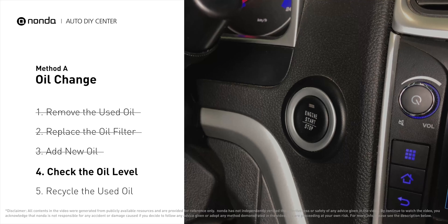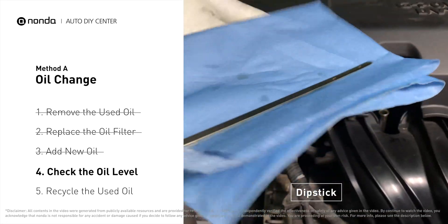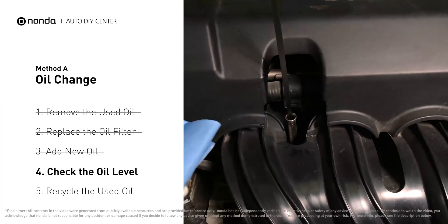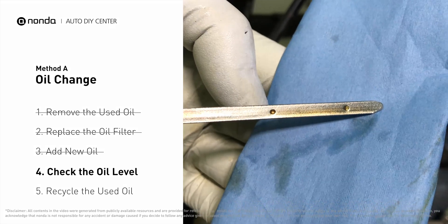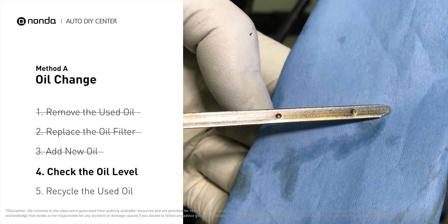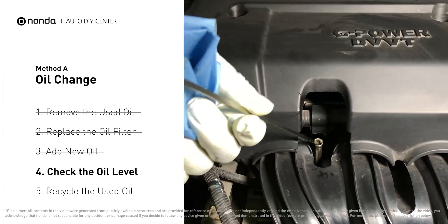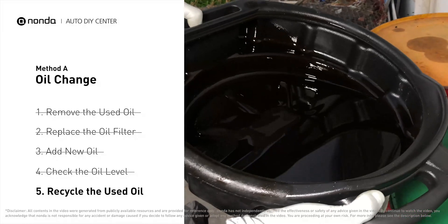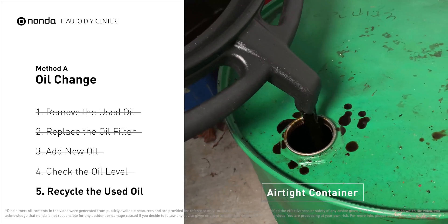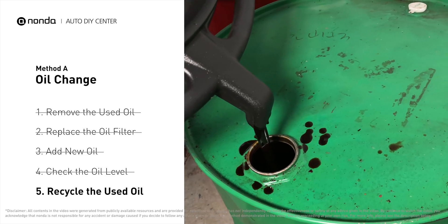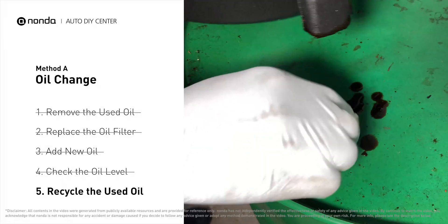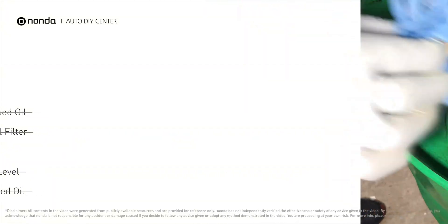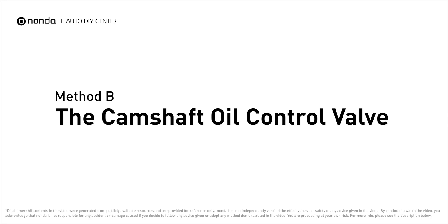To check oil levels, pull the dipstick out and clean it off. Replace the dipstick and pull it out again — the oil should be near the top dot or fill line. If it is close to the lower dot, you'll need to add more oil. If your oil levels are good, replace the dipstick and shut the hood. Place the used oil from your collection pan into an airtight container with a screw-on cap. Make sure the oil is cooled before transferring. Used motor oil can be recycled at most auto stores or at recycling centers.